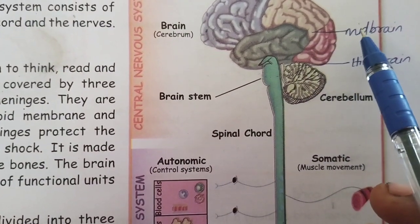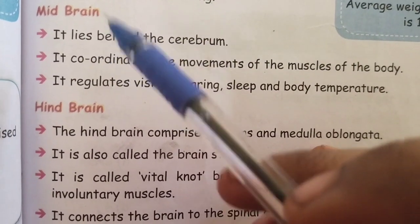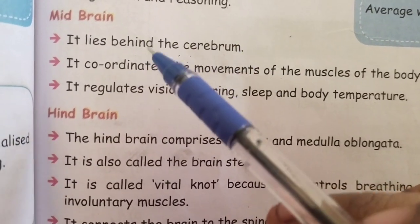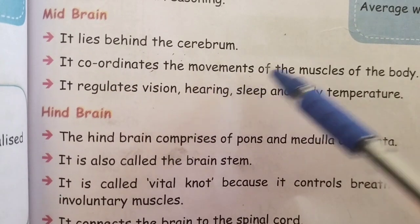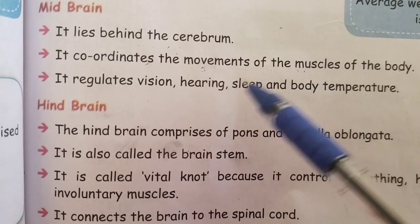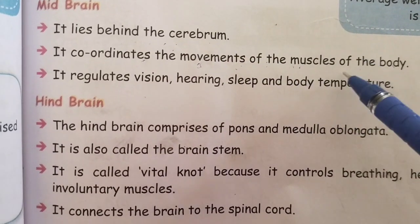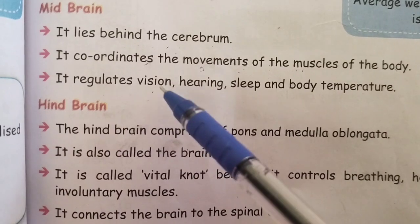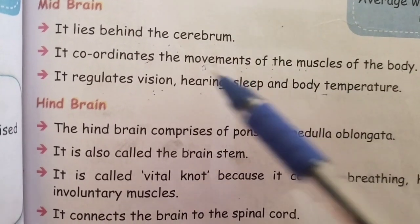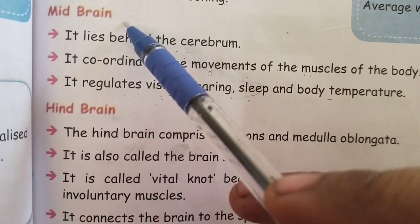The middle part of the brain is called the midbrain, which consists of the cerebellum — meaning small brain. The midbrain lies behind the cerebrum. Its main function is to coordinate the movements of the muscles of the body. It also regulates vision, hearing capacity, sleep and maintains body temperature.